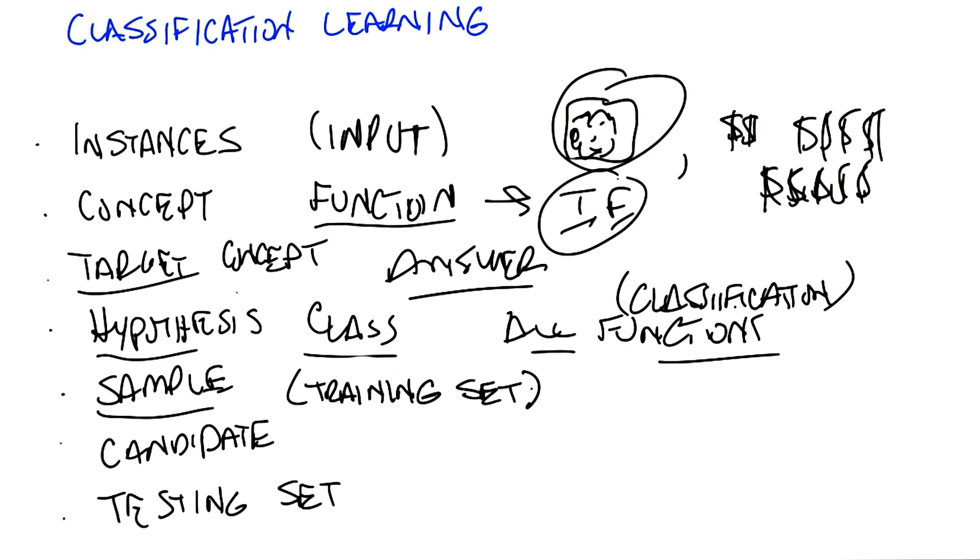So we've got all these instances, we've got all these concepts, we want to find a particular concept, and we've got this set of functions that we're willing to look at. So how are we going to determine what the right answer is? The way that we do that in machine learning is with a sample, or another name for it, which I prefer, is a training set.